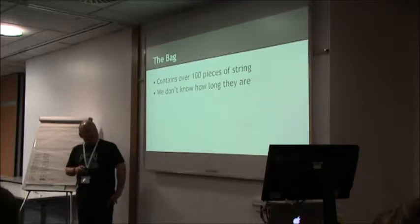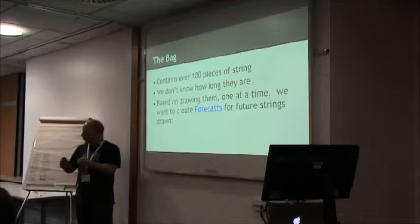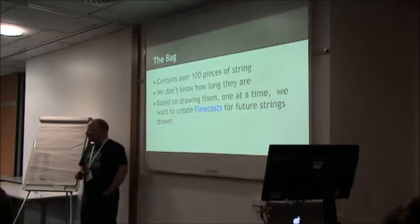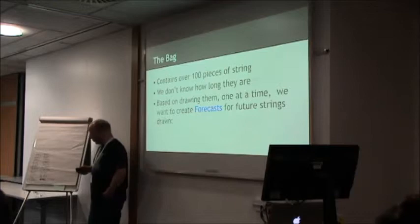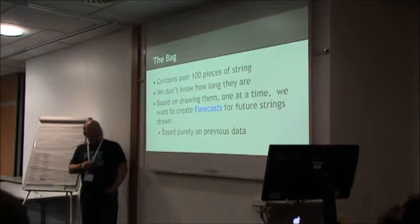That was easier compared to estimating. So we don't know how long the strings are — they're obviously going to be longer than zero. They're longer than whatever a border string is, shorter than the longest possible. We know something about them already. But based on drawing them one at a time, we want to create forecasts for future strings. We've got these values now, and I'm going to show you how the maths side of it works in a minute.